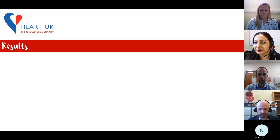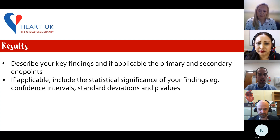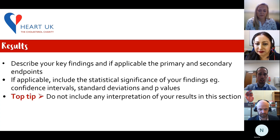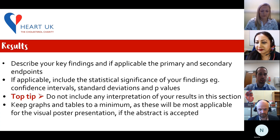In the results section, describe your key findings and, if applicable, the primary and secondary endpoints. It may also be applicable to include some statistical parameters, such as the statistical significance of your findings, including confidence intervals, standard deviations or p-values. As a top tip, you don't want to include any interpretation of your results in this section — that will come later. It's also important to keep graphs and tables to a minimum, as the most appropriate time for these will be the visual poster presentation if the abstract is accepted.